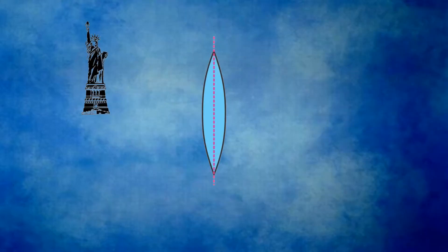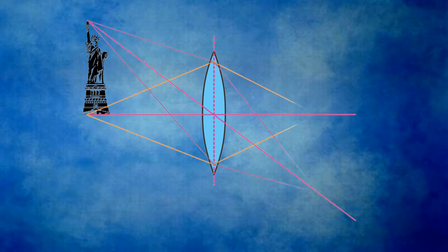Shown here is a diagram of an object and a thin lens. Let's trace rays from the top of the object through the lens to see where they go. First, we will trace the ray that goes through the center of the lens. This is called the chief ray. The rays that go through the edge of the lens are called marginal rays. The convergence of the rays shows where our image appears.